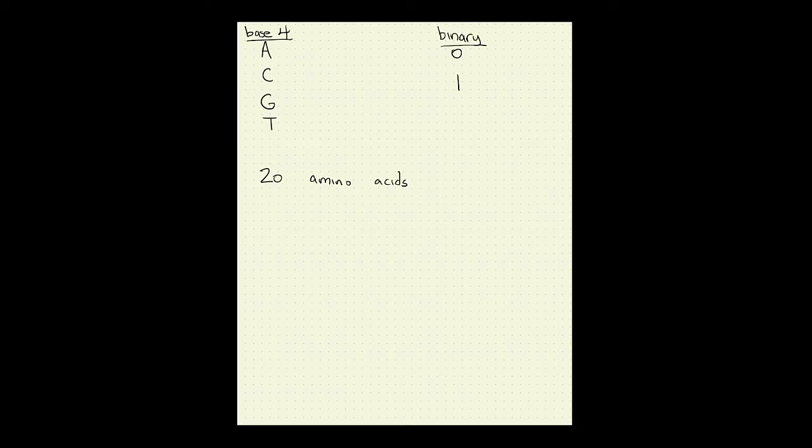This is similar to the ASCII system, where we had two digits — zero and one — and we wanted to encode 128 different messages. There are 128 characters in the ASCII table we looked at, and we used seven binary digits to encode those 128 characters.